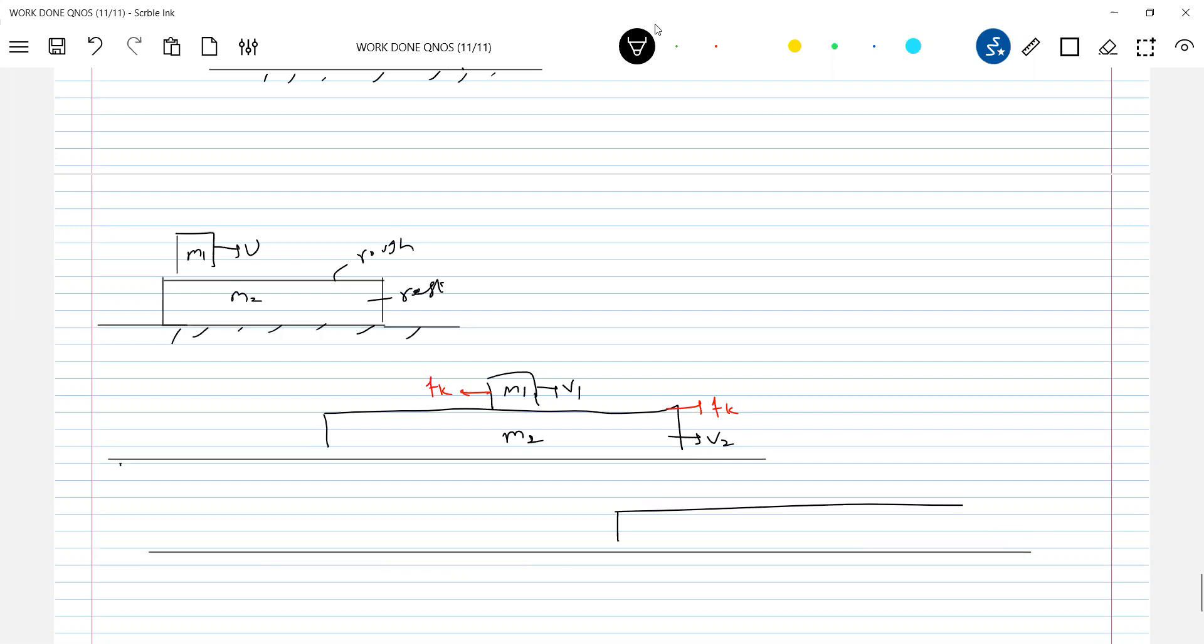So somewhere finally, both will move with a common velocity. Then there's no relative motion. No friction will act. Can you remember this? We have discussed earlier.